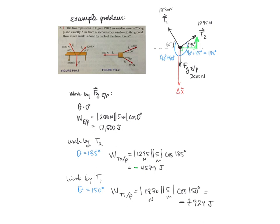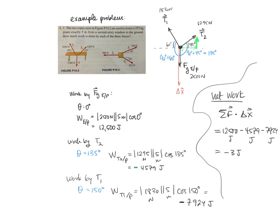So the net work, the net work done, this is the same thing as the net force dotted with the displacement, but we just did them all one at a time, is equal to 12,500 joules minus 4,579 joules minus 7,924 joules. And when you take that all together, minus 4,579 minus 7,924, that is equal to minus 3 joules.